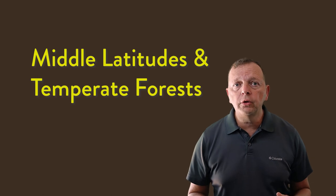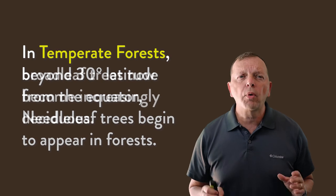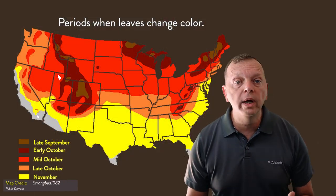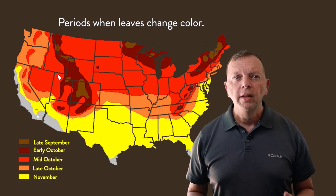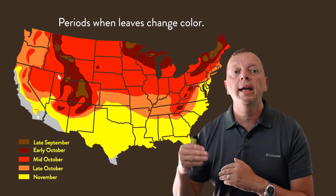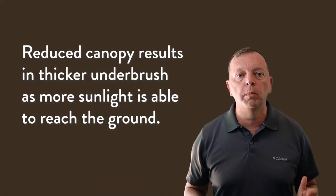As we move into the middle latitudes, we begin seeing needleleaf trees in addition to broadleaf trees. Broadleaf trees are also more likely to be deciduous — trees whose leaves turn color and drop in the fall. Latitude and elevation play a large part in deciding when these trees will turn color, beginning earlier where temperatures are cooler, further from the equator, and at higher elevations. Because the canopies of these broadleaf, coniferous, mixed forests in the temperate latitudes are not as thick as the tropical rainforest, you'll find the underbrush in these forests is much, much thicker.